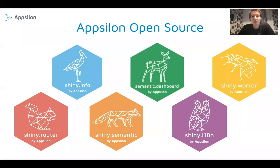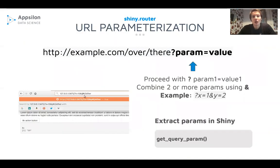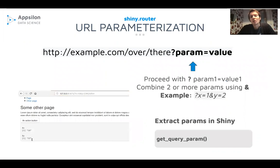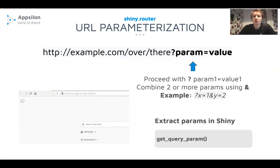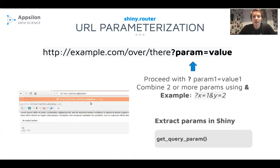Apsilon's open source package family is not limited to Semantic-related packages. Our portfolio also includes Shiny Router, Shiny Info, Shiny internationalization, and Shiny Worker. Shiny Router is a minimalistic router for Shiny apps that helps you split your app into sub-pages with their own unique URL addresses. It also comes with URL parameterization, allowing you to add parameter-to-value mappings to your URL, and then with one simple function call retrieve that information to populate your UI inputs.